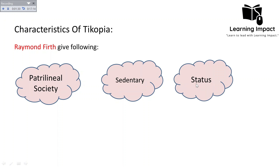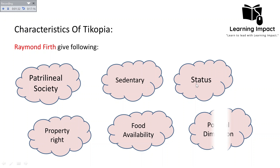Egalitarian societies were mobile and nomadic, while those who were relatively sedentary are classified as rank societies. The concept of status arose because a political dimension emerged, leading to high and lower status. There was also greater food availability as property rights emerged — sedentary people tried to own land and grow crops, which meant they no longer needed to move. This absence of diverse options, combined with emerging leadership and status distinctions, is how egalitarian society became ranked society.